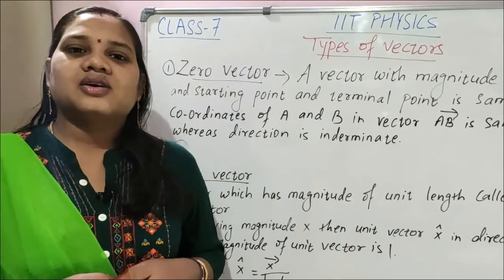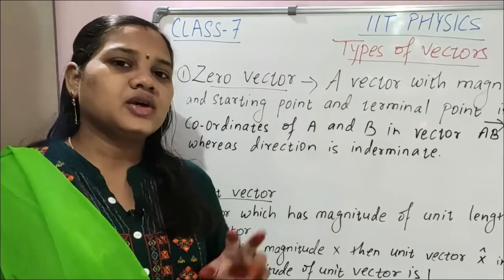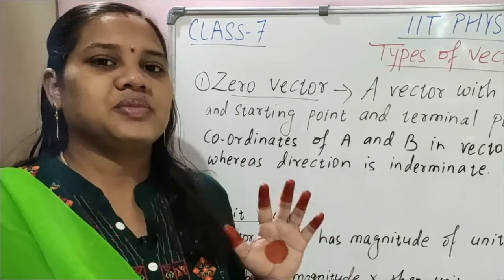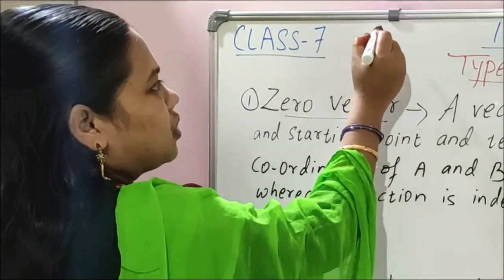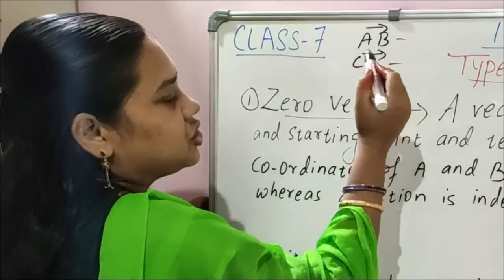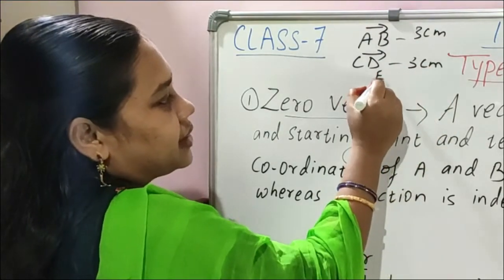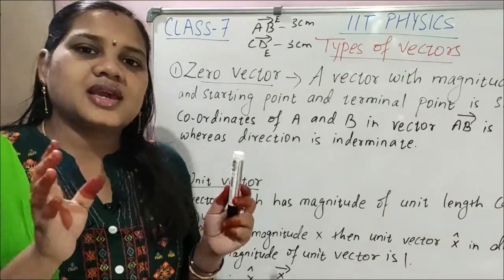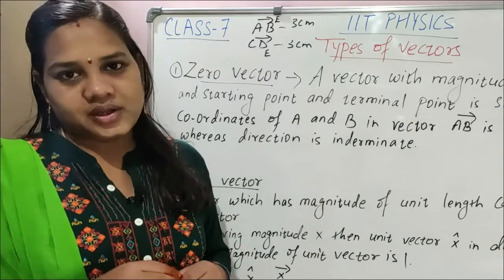Just once we will revise that one. So first, equal vectors. Equal vectors means two or more vectors having same magnitude and same direction. Suppose AB is one vector and CD is one more vector, both having magnitude same — three centimeters — and both are pointing same direction, east. So two or more vectors having same magnitude and pointing same direction are equal vectors.